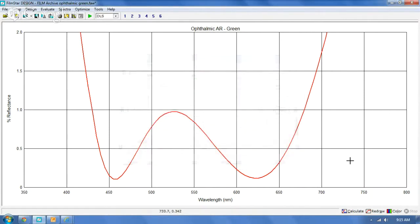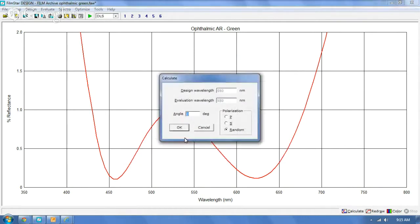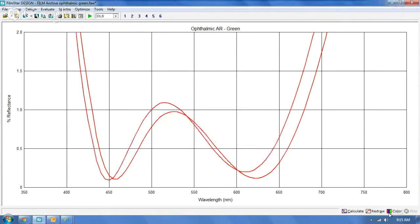So now polycarbonate has a different refractive index than CR39. And so if we calculate that out, we can see that the color is going to be slightly different.